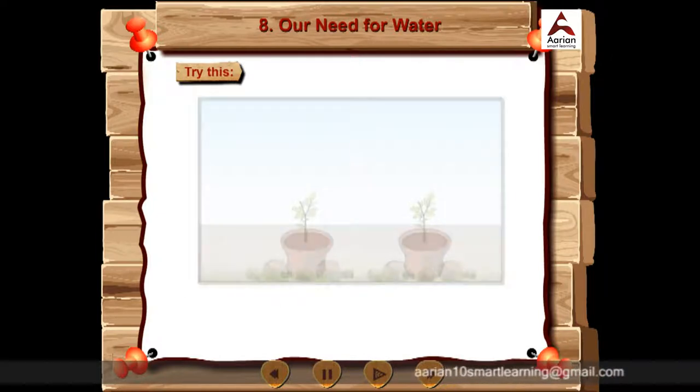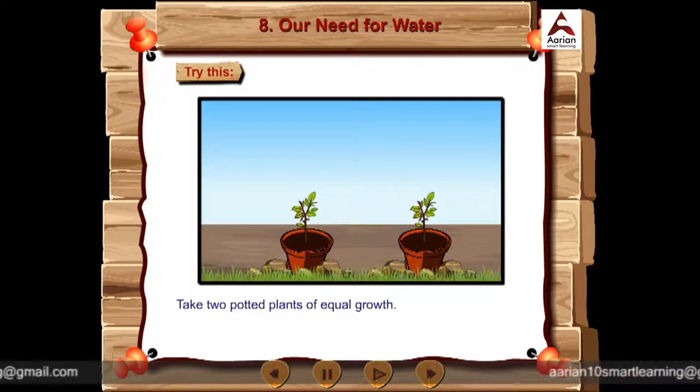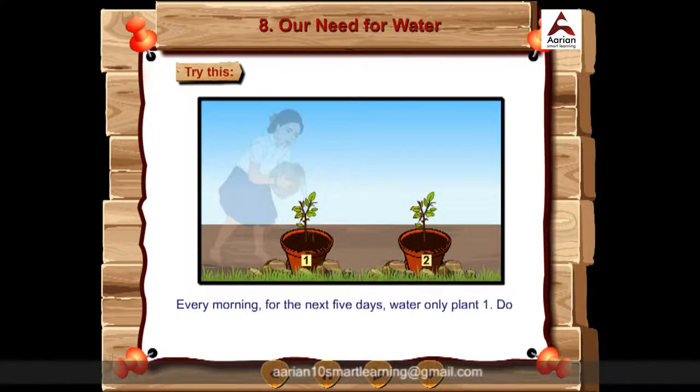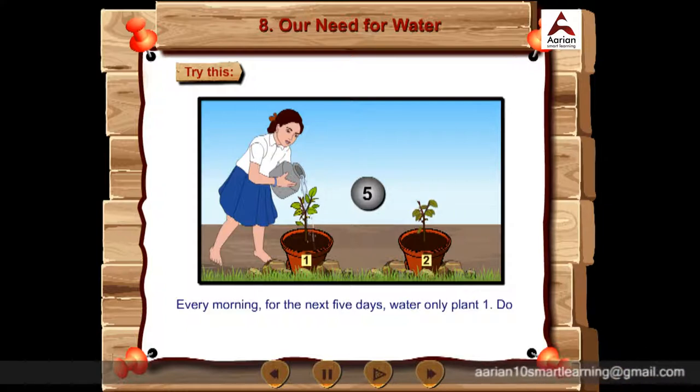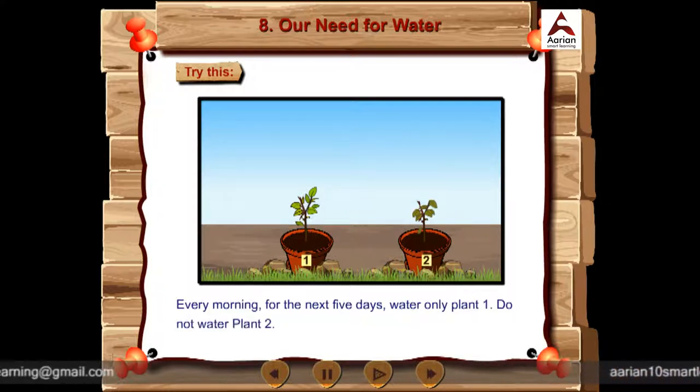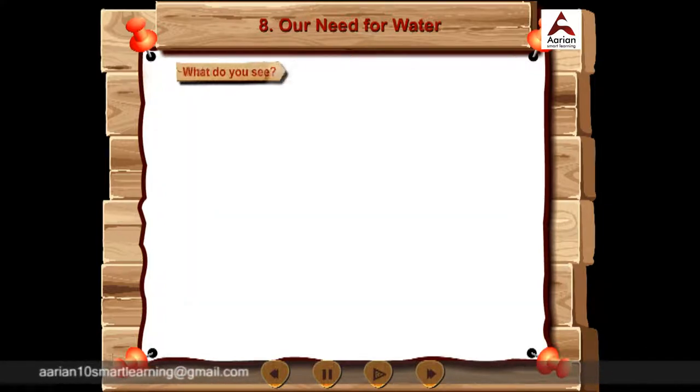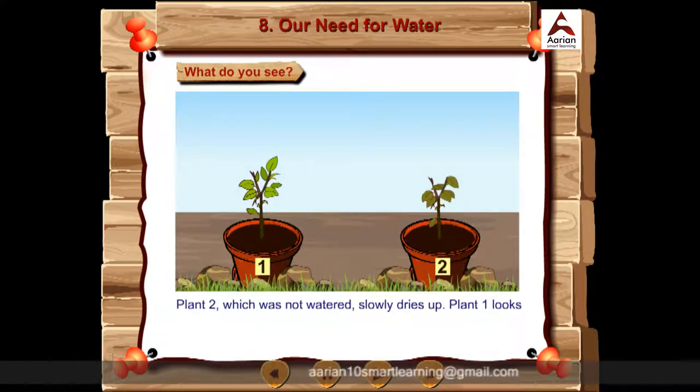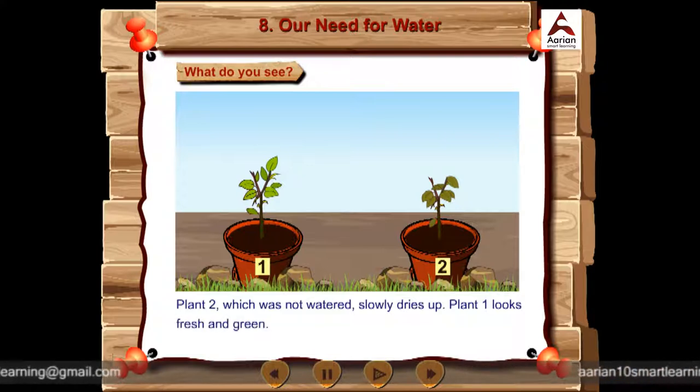Try this. Take two potted plants of equal growth. Label them as one and two. Every morning for the next five days, water only plant one. Do not water plant two. What do you see? Plant two, which was not watered, slowly dries up. Plant one looks fresh and green.